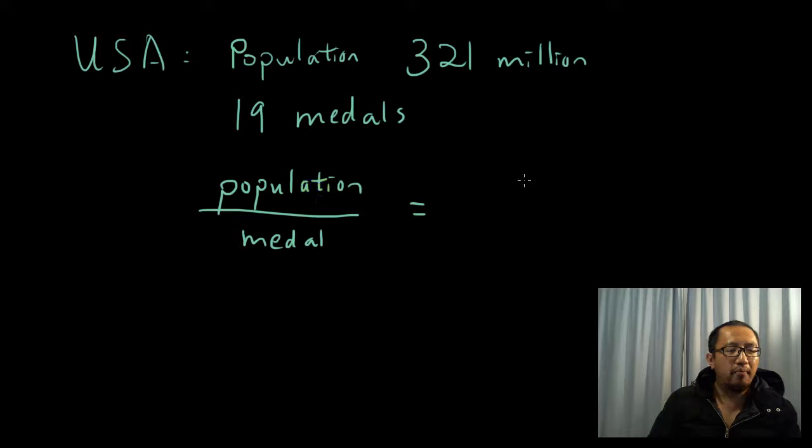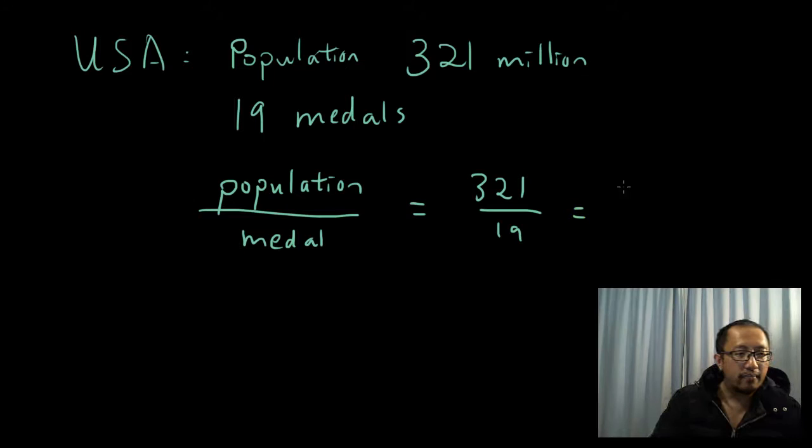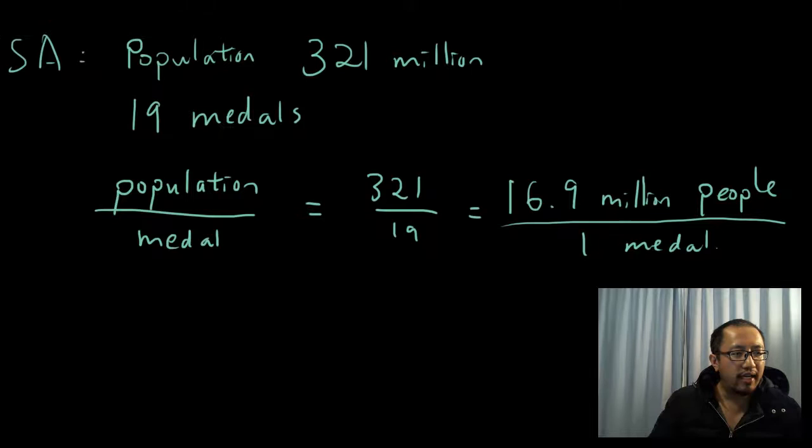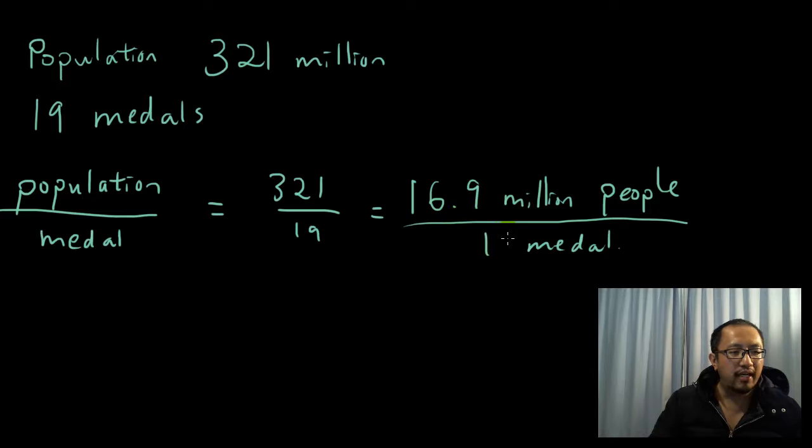So let's go 321 divided by 19, which is about 16.9 million people per medal. Okay, so it takes the USA—it takes Americans 16.9 million people to get one medal.